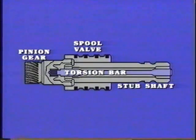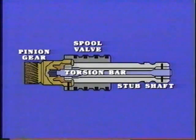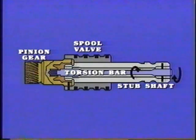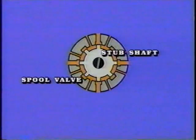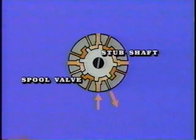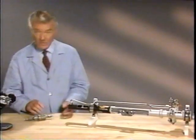Inside the valve, the torsion bar is a press fit in the pinion, while the other end is held to the stub shaft by a pin. The spool valve is anchored to the pinion by another pin. Steering input is through the stub shaft. As the driver turns the steering wheel, the stub shaft twists the torsion bar. The spool valve is attached to the pinion, which resists turning because the road is holding it. A hydraulic passage opens when the stub shaft groove rotates under a spool valve groove. Power steering fluid flows from the pump through the valve to one side of the rack piston. The force on the piston causes rack movement, which turns the wheels.